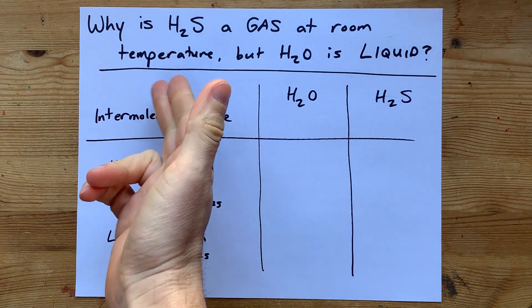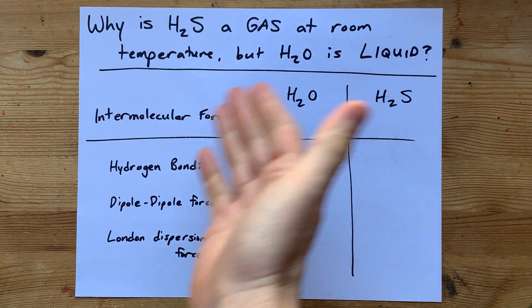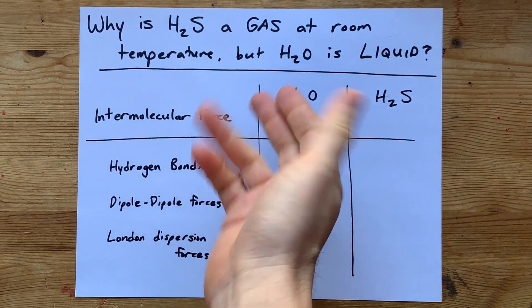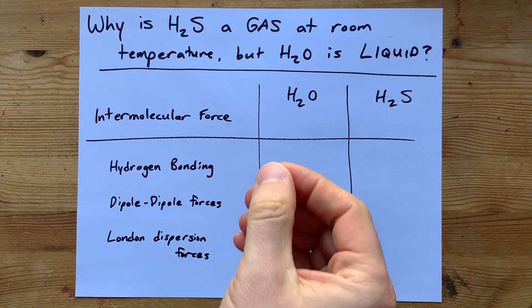Why is hydrogen sulfide, H2S, a gas at room temperature, but H2O, which is a smaller molecule, is a liquid at room temperature?